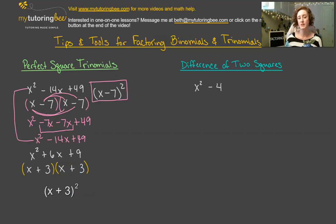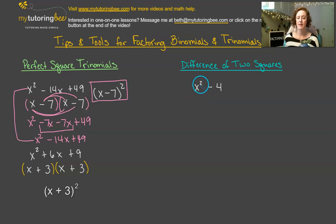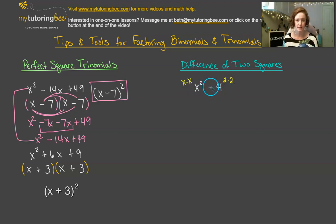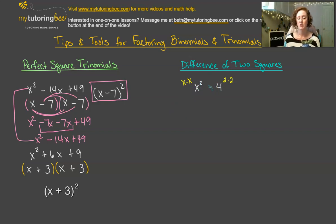Now we're going to look at the difference of two squares. What we're looking for is that each term has to be a perfect square — x squared is just x times x, and 4 can be 2 times 2. And they have to be subtracted. If you see an addition sign in the middle, it's not going to be a difference of two squares. But if you see a subtraction, that's your cue to think, okay, this is a difference of two squares. So let's figure out how to factor these.